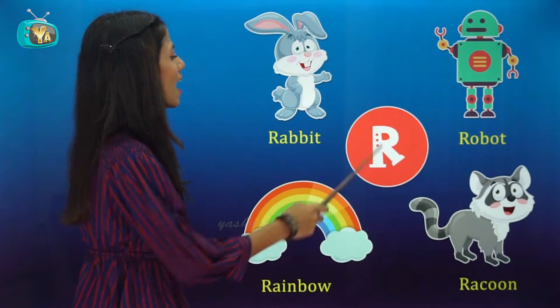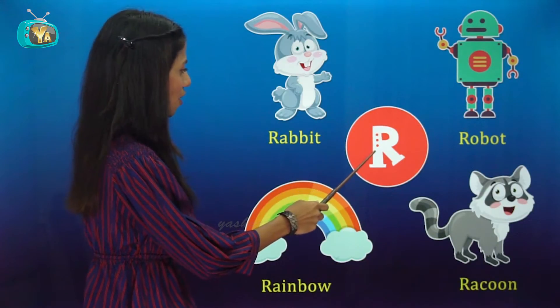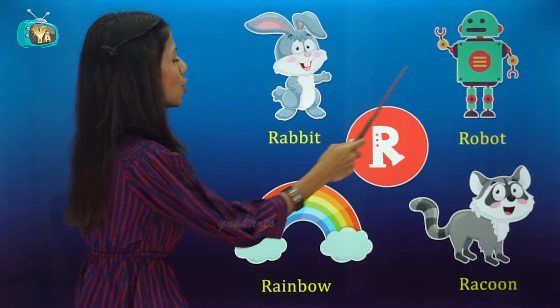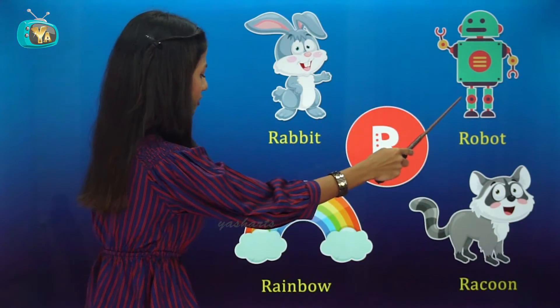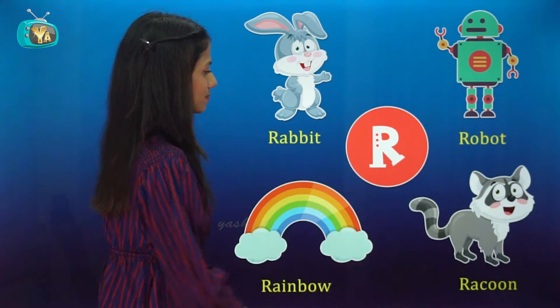R. R for Rabbit, Robot, Rainbow, Raccoon.